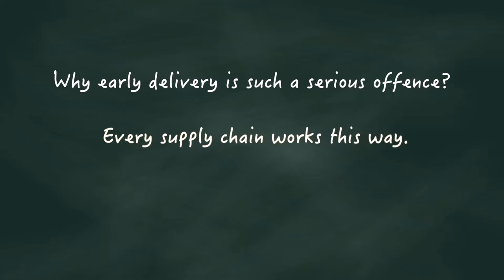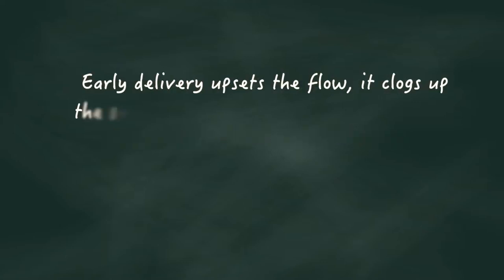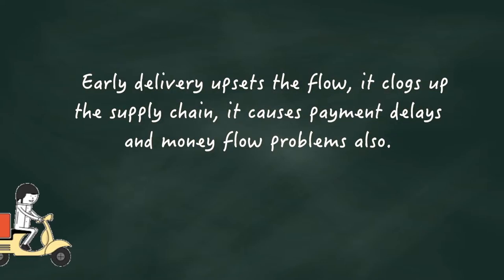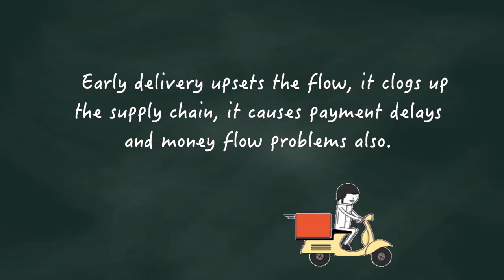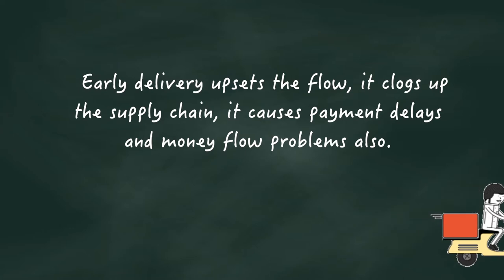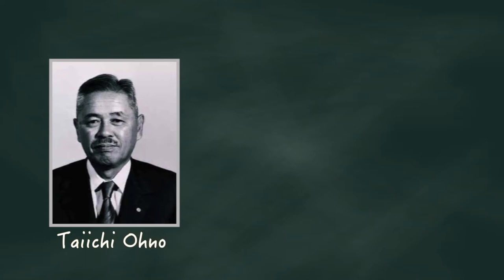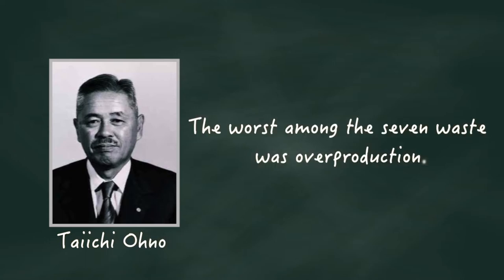Every supply chain works this way. Early delivery upsets the flow. It clogs up the supply chain. It causes payment delays and money flow problems also. Taichi Ono once said the worst among the seven wastes was overproduction. This hasn't been understood properly by anyone. Taichi Ono did not talk about the numbers. Taichi Ono was always talking of flow.